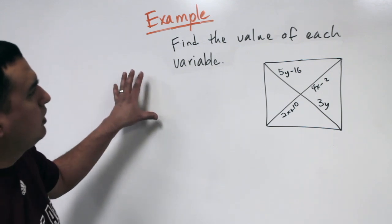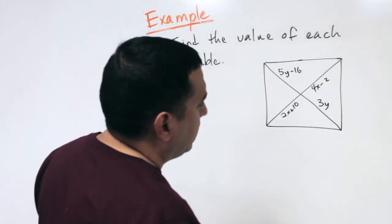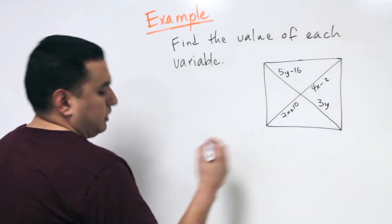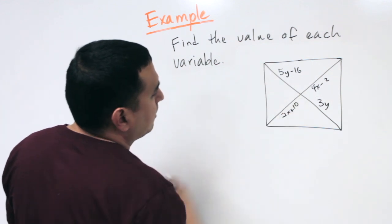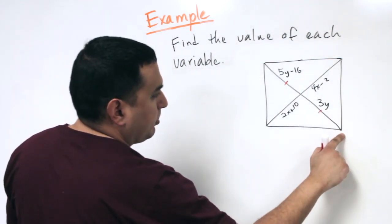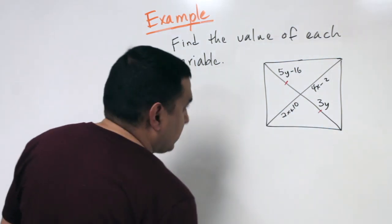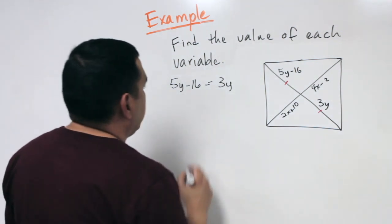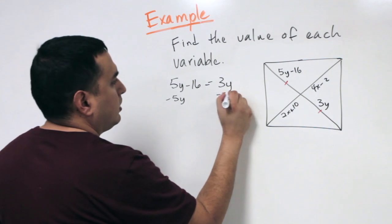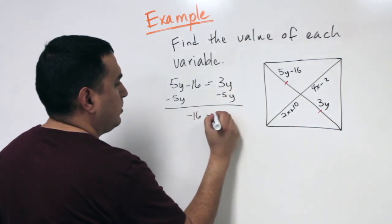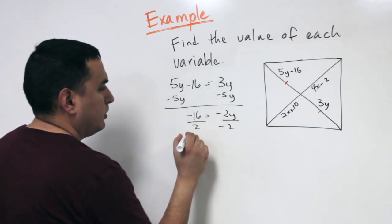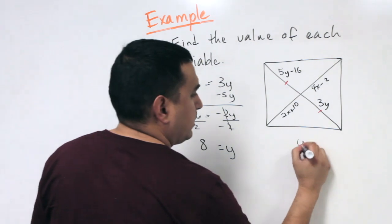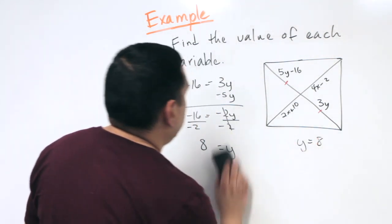For this example, the diagonals are drawn, and since they bisect each other, this piece from a vertex to the intersection point has to equal the piece from the opposite vertex to that same intersection point. I'll solve for Y first by setting 5Y minus 16 equal to 3Y. Subtracting 5Y from both sides gives negative 16 equals negative 2Y. Dividing by negative 2, Y equals 8.